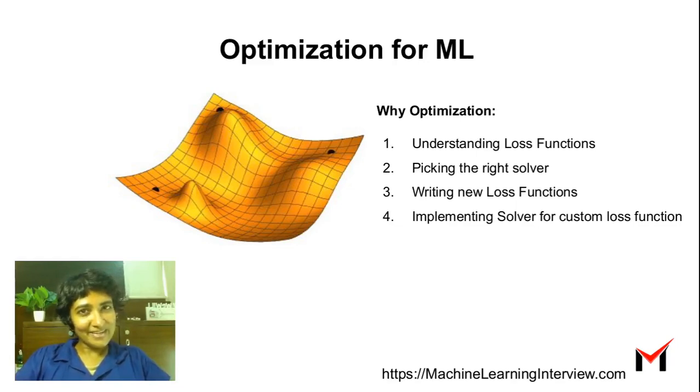To summarize, we just saw why we need optimization for machine learning: to understand loss functions when we see them, to pick the right solver for a model we're building, to write new loss functions when needed, and to implement solvers for custom loss functions and models.